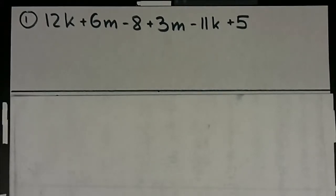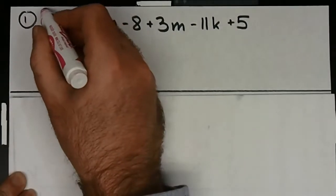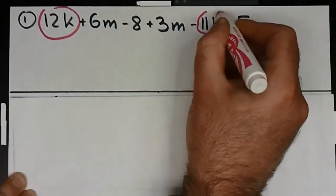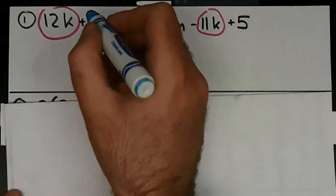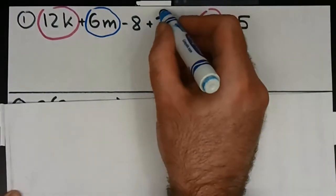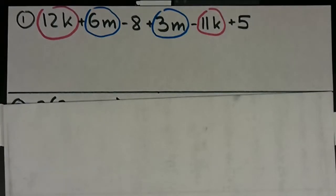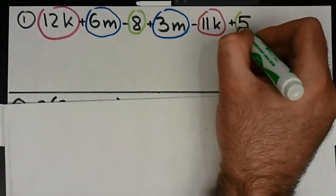Let's start with number one: combining like terms and simplifying. Can someone tell me what are the three different term types here? I have the k term right here, so I have two k terms. Then I have the m terms right here and right here. And finally I have my constants, or just simple numbers, right here and right here.